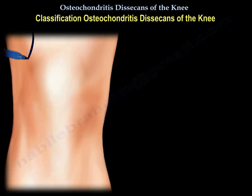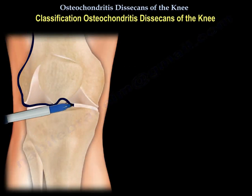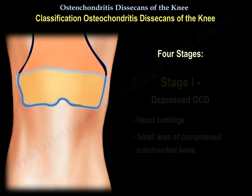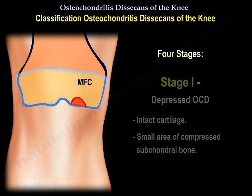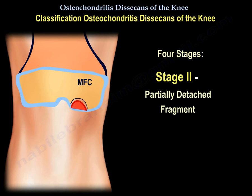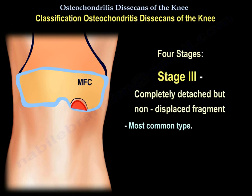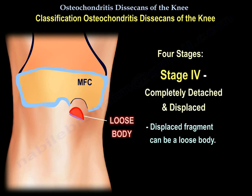Classification of osteochondritis dissecans of the knee has four stages. Stage 1 is a depressed OCD lesion with intact cartilage and a small area of compressed subchondral bone. Stage 2 is a partially detached fragment. Stage 3 is a completely detached but non-displaced fragment — the most common type. Stage 4 is completely detached and displaced, where the displaced fragment can become a loose body.